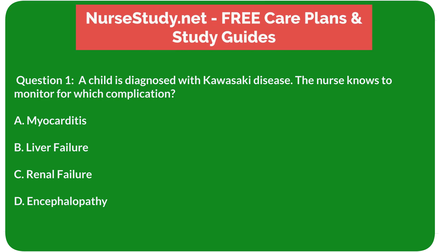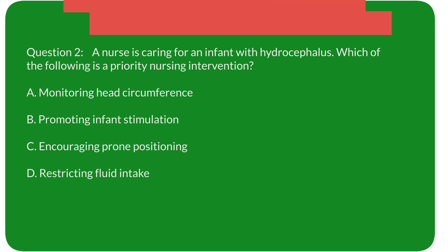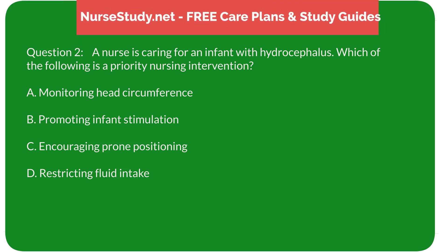Question 1: A child is diagnosed with Kawasaki disease. The nurse knows to monitor for which complication? A) myocarditis, B) liver failure, C) renal failure, D) encephalopathy. Answer: A) myocarditis. Rationale: Kawasaki disease can lead to serious complications involving the heart, such as myocarditis and coronary artery aneurysms.